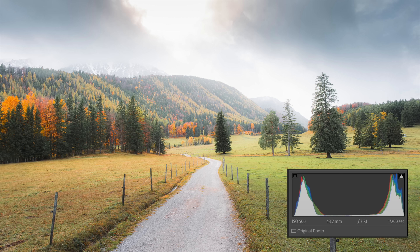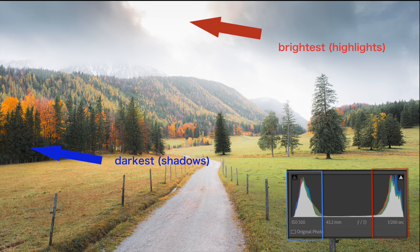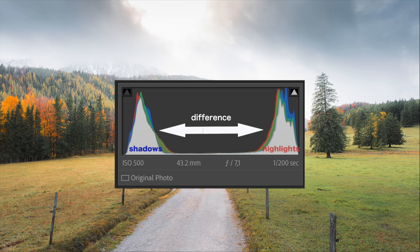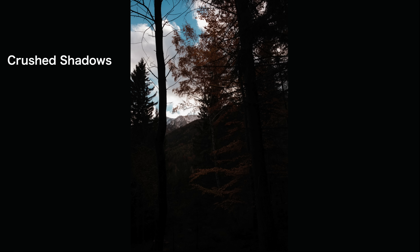So in order for everybody to be on the same page — what is dynamic range? Dynamic range is effectively the difference between the brightest parts in your photo and the darkest parts. The bigger the difference between the brightest and the darkest parts, the bigger the dynamic range of your scene, and the more issues your camera might have to properly expose both in one single photo.